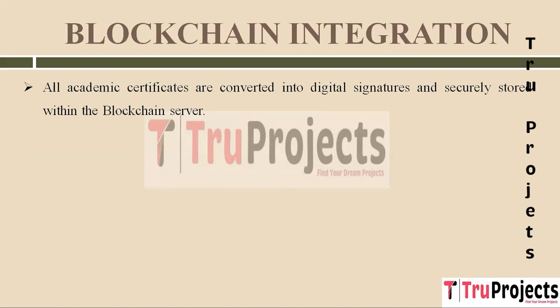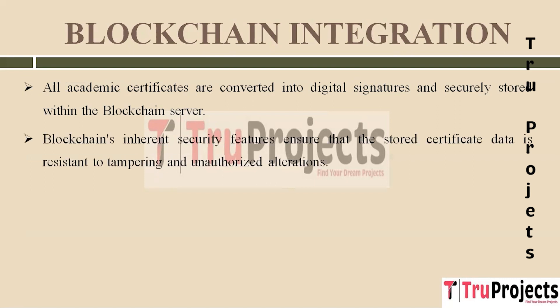Once the digital signature is generated, it is securely associated with the original certificate. These securely stored digital signatures and associated certificate data are integrated into a blockchain system, where data is stored within blocks. The data stored within the blockchain is secured using cryptographic techniques and distributed across multiple nodes or computers. Once data is recorded in a block, it becomes extremely challenging to alter without consensus from the majority of nodes.